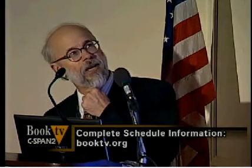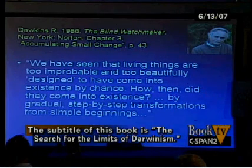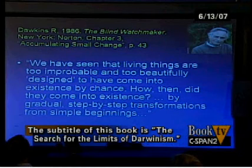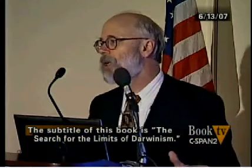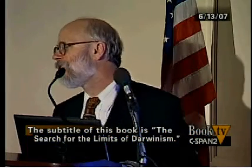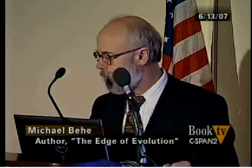For example, Richard Dawkins wrote in 1986 that living things are too improbable and too beautifully designed to have come into existence by chance. How then did they come into existence? By gradual step-by-step transformations from simple beginnings — kind of like the simple evolutionary landscape. He doesn't let the complexities of life bother him; he says that no matter what, Darwin's theory can explain everything.